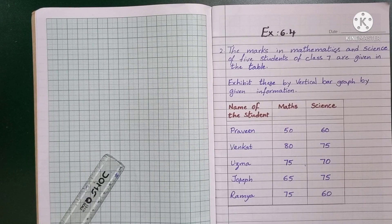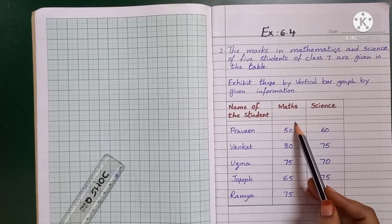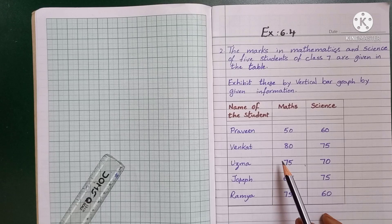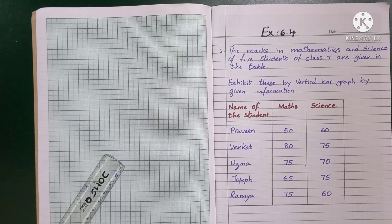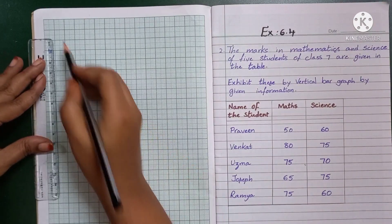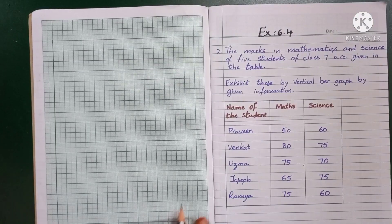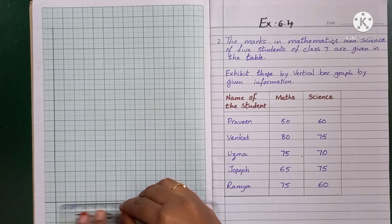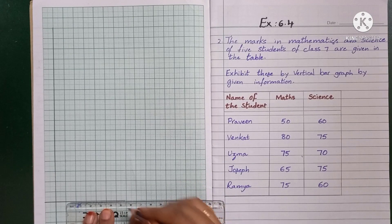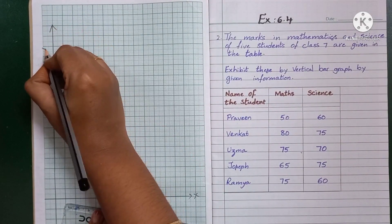Come back to our question. Now let us draw the x-axis and y-axis. The vertical line is the y-axis and the horizontal line is the x-axis. On the x-axis, let us take names of the students: Praveen, Venkat, Uzma, Joseph, and Ramya.